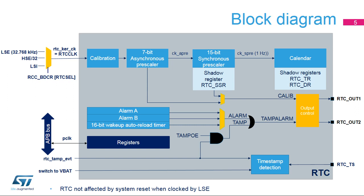The RTC clock is first divided by a 7-bit programmable asynchronous prescaler, which provides the CKAPRE clock. Most of the RTC is clocked at the CKAPRE frequency, so in order to reduce power consumption, it is recommended to set a high asynchronous division value. The default value is 128. Then, a 15-bit programmable synchronous prescaler provides the CKSPRE clock, which must be 1 Hz in order to update the time and date BCD registers in one-second increments. The sub-second register resolution is defined by the CKAPRE frequency. By default, it is 256 Hz when the RTC clock frequency is 32,768 Hz.